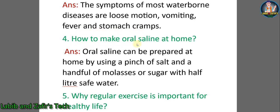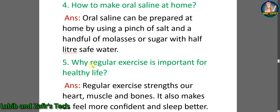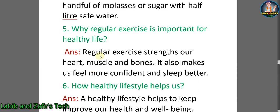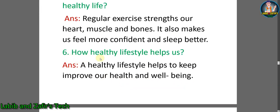Number four: how to make oral saline at home? Answer: oral saline can be prepared at home by using a pinch of salt and a handful of molasses or sugar with half a liter of safe water. Number five: why is regular exercise important for a healthy life? Answer: regular exercise strengthens our heart, muscles, and bones. It also makes us feel more confident and sleep better.